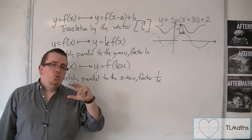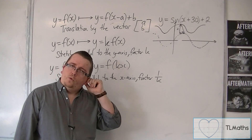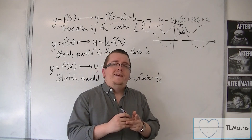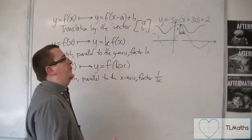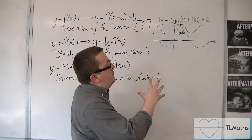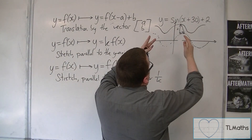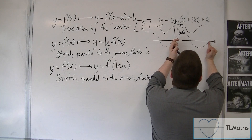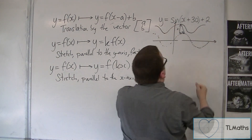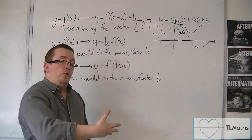You won't be asked to sketch a transformed sine curve like that, but I want you to understand that the curve itself has not changed shape — it has just been moved. That's what a translation is. Linking that to the period: the period tells you over what distance the curve repeats itself, and for sine that's every 360 degrees. The transformed curve would still have a period of 360 degrees.